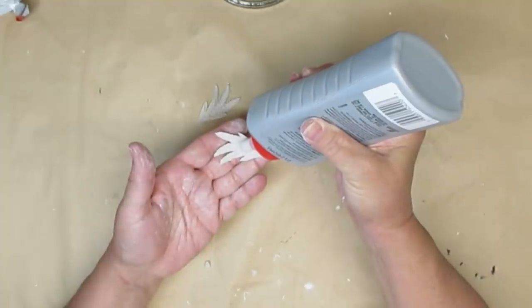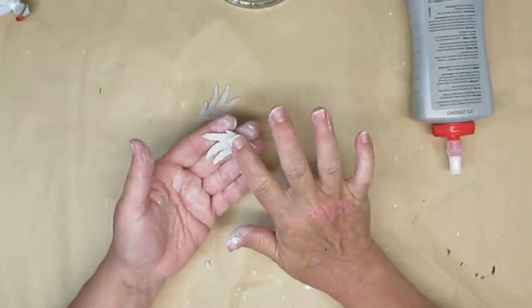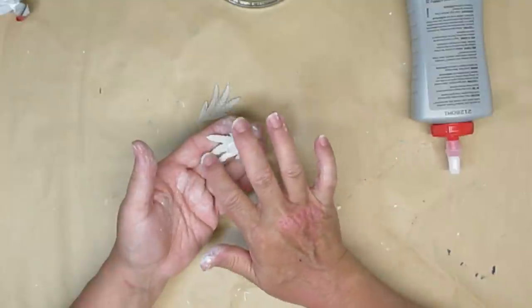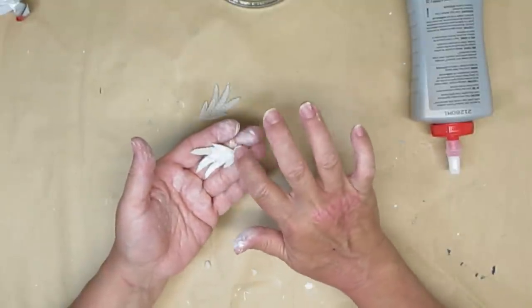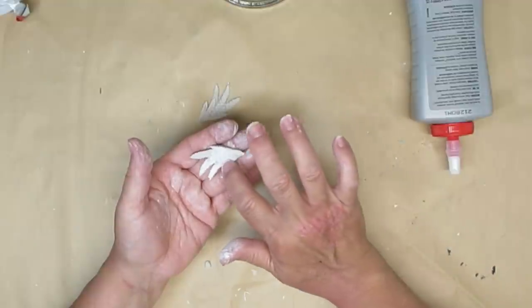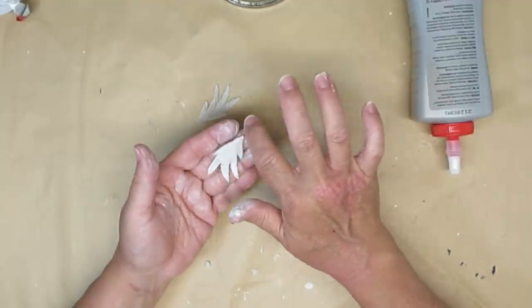Again, I'm using the Weld Bond glue because it's going to be a permanent hold and it's really easy to spread around. I let these all dry overnight, 24 hours as I mentioned earlier, and there was no lifting, no cracking. It all turned out perfect.